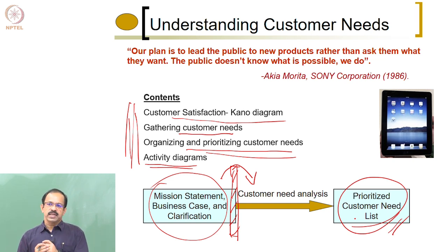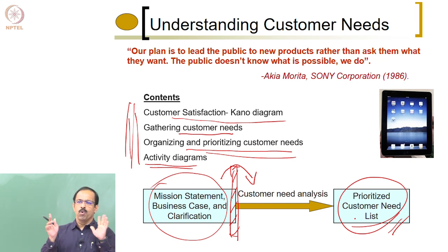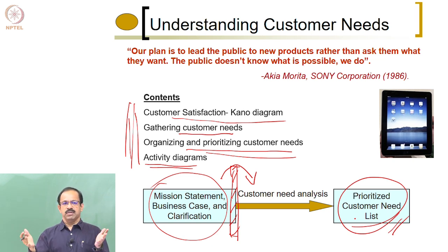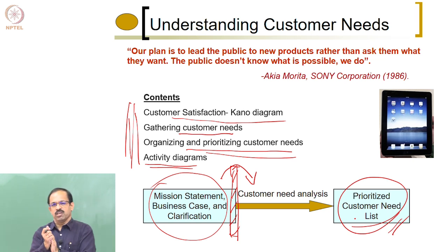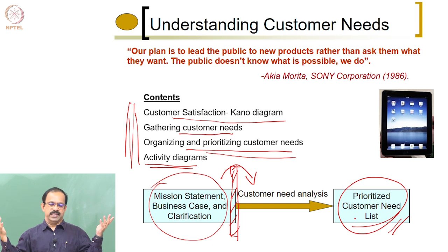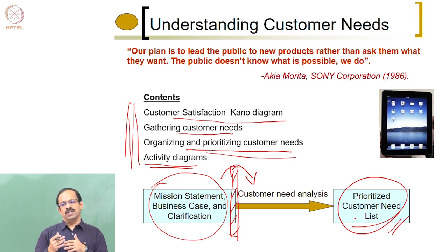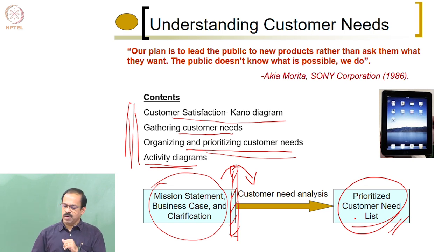Product design actually happens in two modes. One is that the customer asks for something — saying they have a problem with this product or there is no product to meet some of their requirements — and you start from the customers and then design a product. The other mode is the technologist knows what is possible to be developed, then develops it and gives it to the customer, and the customer accepts it.